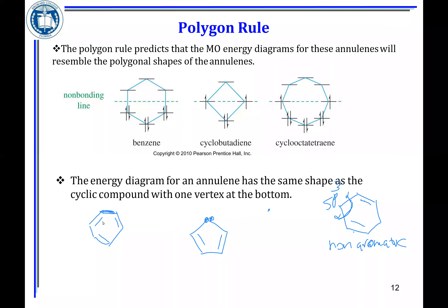It must be conjugated, it must be cyclic, and it must follow the 4n+2 rule, where 4n+2 equals the number of pi electrons. When you solve this, you should get a value for n that is an integer — it could be 0, 1, 2, 3, or 4 — but you cannot have a decimal.